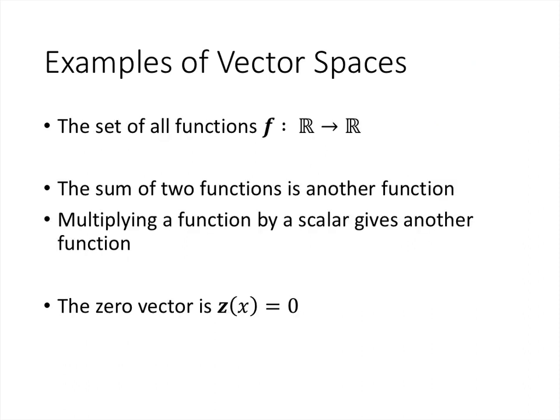One more example before we close. We've got a set of all functions from real numbers to real numbers. And again, we have to talk about how do we define the two operations, vector addition and scalar multiplication, and then what's the zero vector?